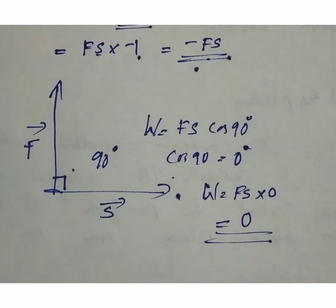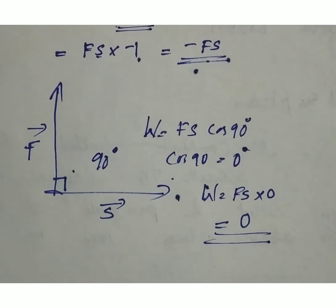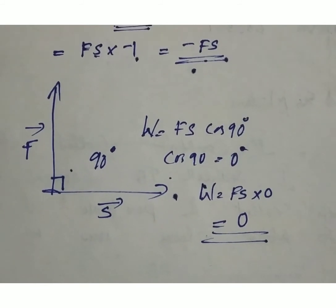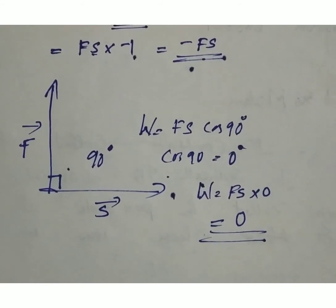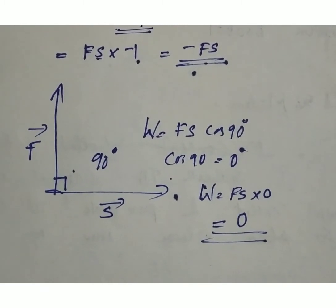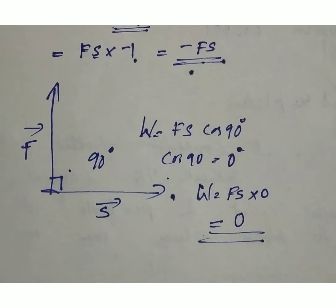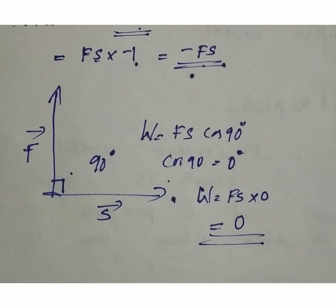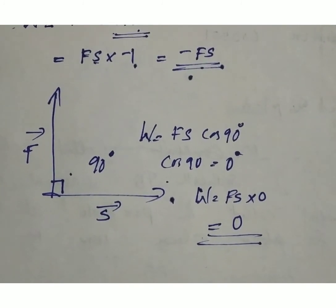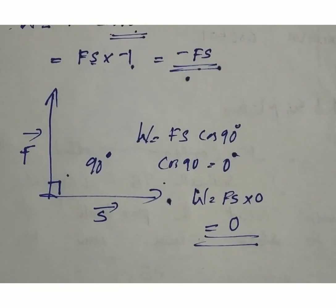So when a force is acting at an angle, the equation is W equals Fs cos theta. Theta may be 0, 180, or 90 degrees. For all other angles like 45 or 30 degrees, we find the value of cos from the trigonometric table. We are discussing the cases at 0 degrees, 180 degrees, and 90 degrees — same direction, opposite direction, and perpendicular to each other.